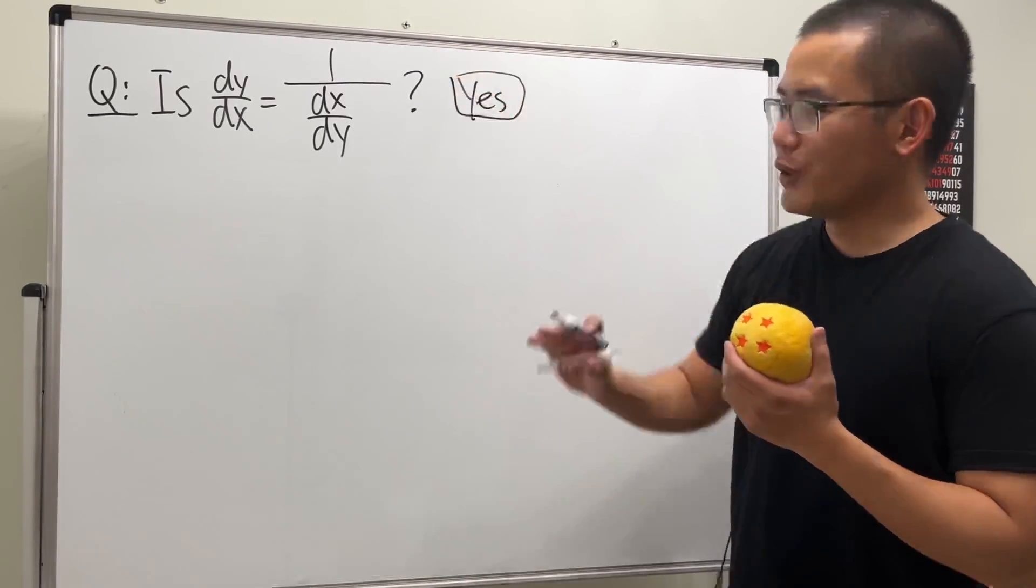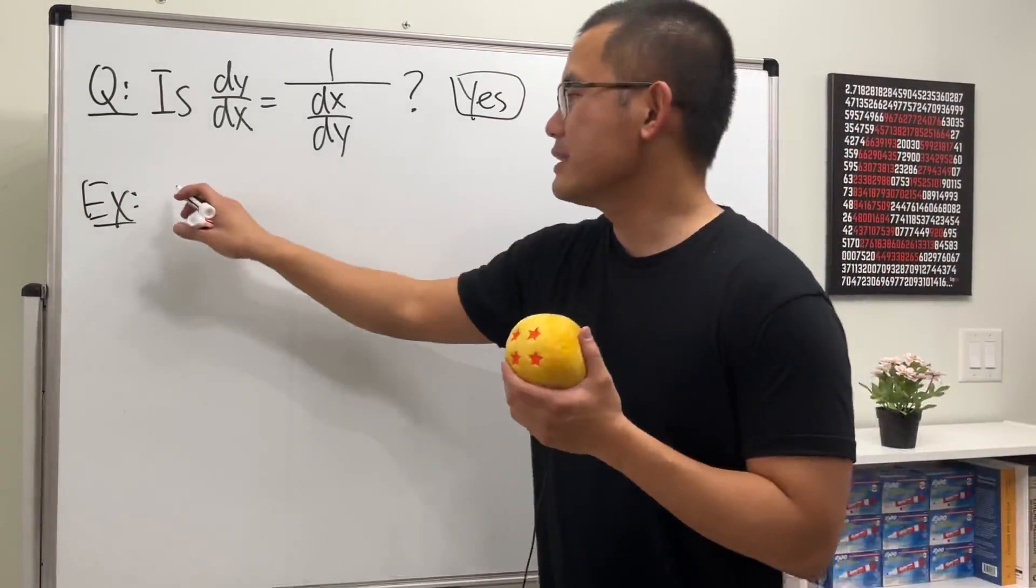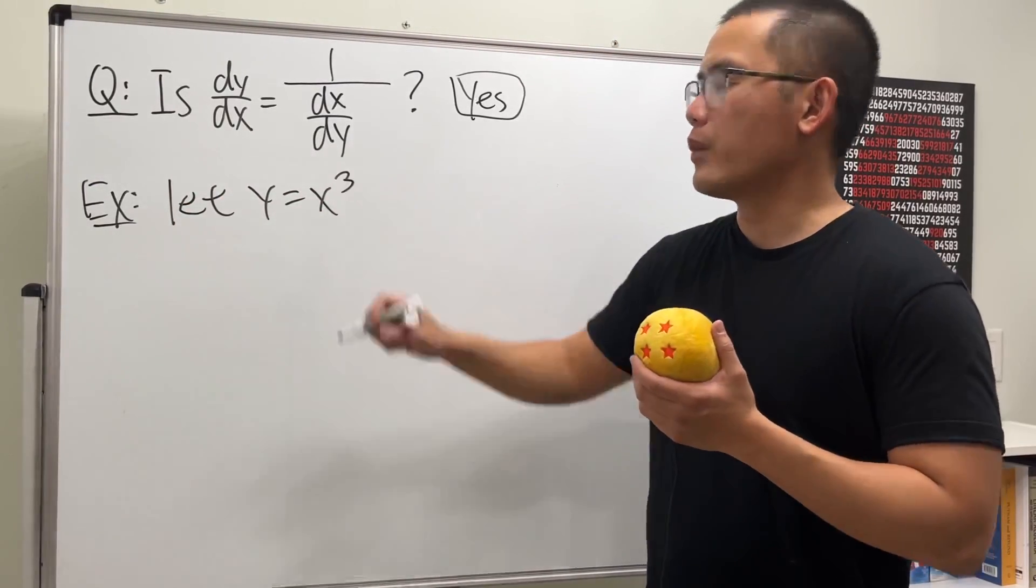I will just show you guys an example real quick. This is not a full explanation but just an example. Let's consider the following: let y equal x to the third power.